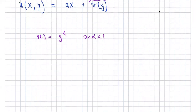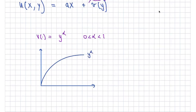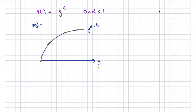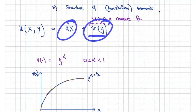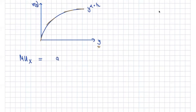For example, the square root of y is a concave function. If I graph y to the power of alpha — say the square root function — with y on the horizontal axis and v(y) on the vertical axis, the slope near zero tends to infinity and gets closer to zero as y grows. That slope is exactly the marginal utility. The marginal utility of x in a quasi-linear function is just the constant a, and the marginal utility of y is the derivative of the concave function v.